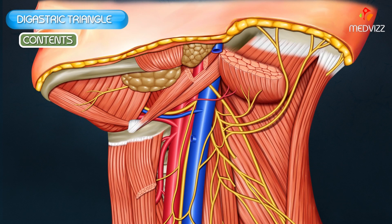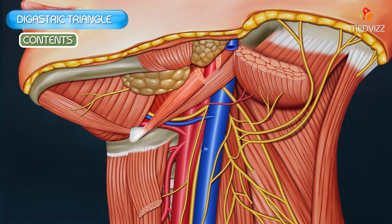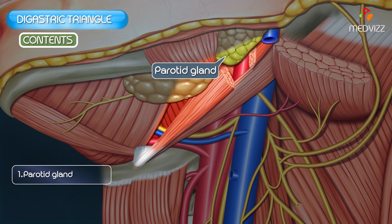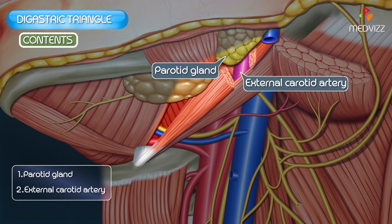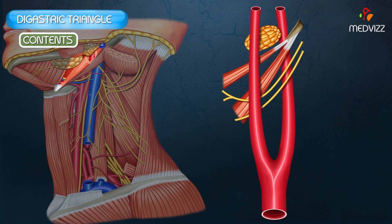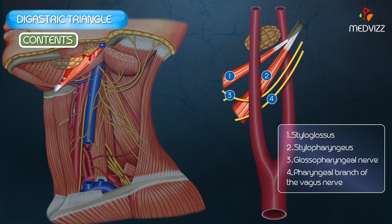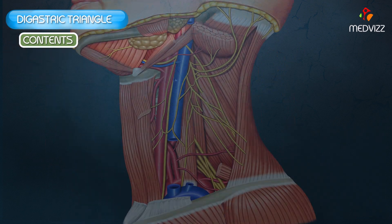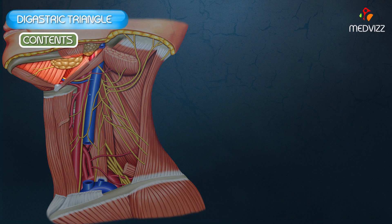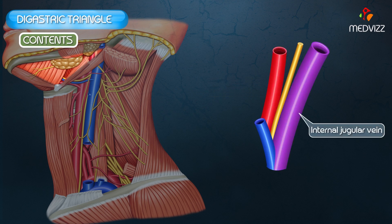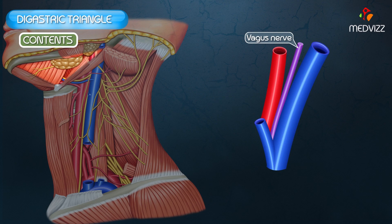In the posterior part of the triangle, the superficial structures are the lower part of the parotid gland as well as the external carotid artery before it enters the parotid gland. The deep structures passing between the external carotid arteries are the styloglossus, the stylopharyngeus, the glossopharyngeal nerve, and the pharyngeal branch of the vagus nerve, the styloid process, and a part of the parotid gland. The deep structures include the internal carotid artery, internal jugular vein, and the vagus nerve. This concludes the digastric triangle.